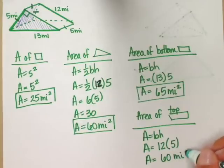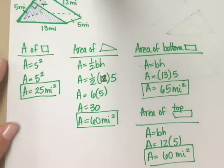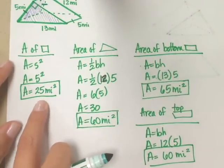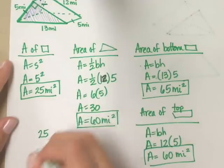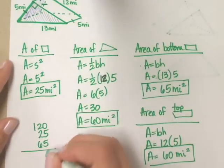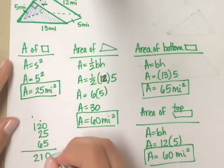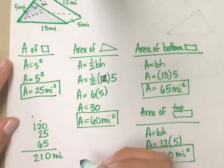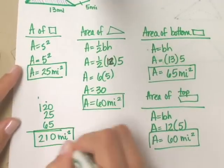Now am I finished? You need to add them all together. Add them all together, so 25 and 60, 65 and 60... 25, 65, and 120. What'd you get? I got 210. So did I. 210 miles squared - it's area. Well, there you go.